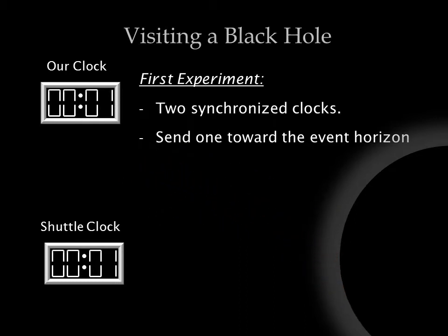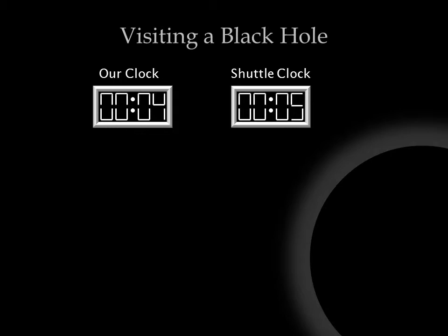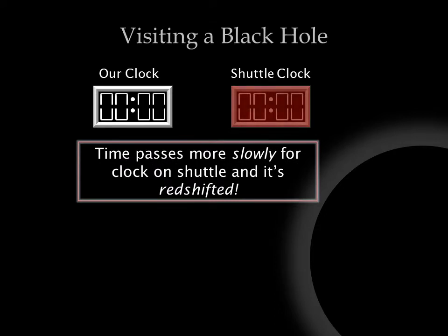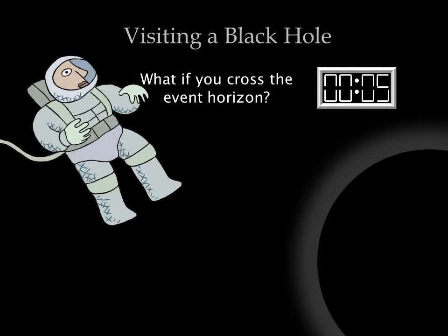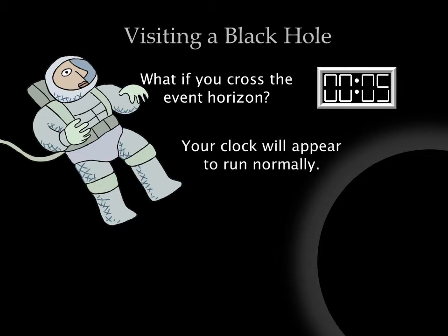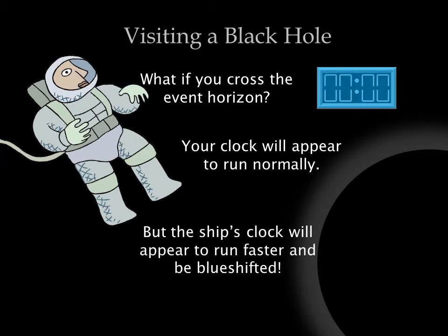To see how the gravity of a black hole affects time, we'll take two synchronized clocks from our spaceship and send one toward the event horizon on a small shuttle. If we watch the clock as it moves toward the black hole, we find that it runs more slowly than our ship clock. Also, it turns red — eventually redshifted so much that we can't see it at all. If you head out to the event horizon yourself with another synchronized clock, your clock appears to be working normally — it's not slowing down or turning red for you. But if you look at the ship's clock, it's turning blue and moving faster.